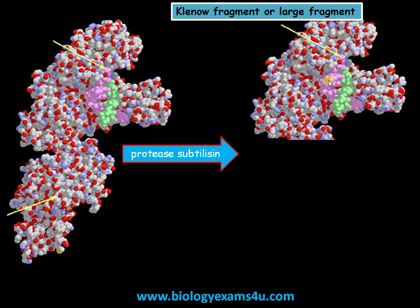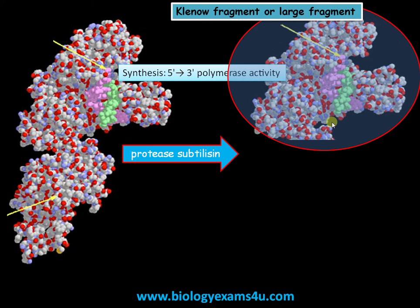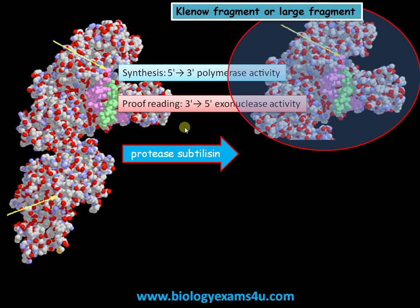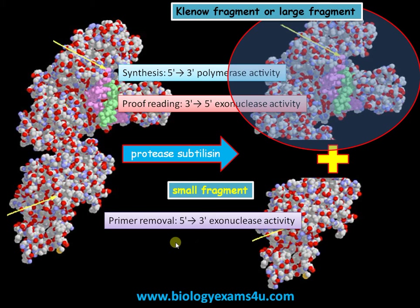The large fragment contains two domains: the domain with synthetic activity (5'-3' polymerase activity) and the domain with proofreading activity (3'-5' exonuclease activity). There is also a small fragment, which retains the primer removal or 5'-3' exonuclease activity. In short, the Klenow fragment can be defined as DNA polymerase I without 5'-3' exonuclease activity.